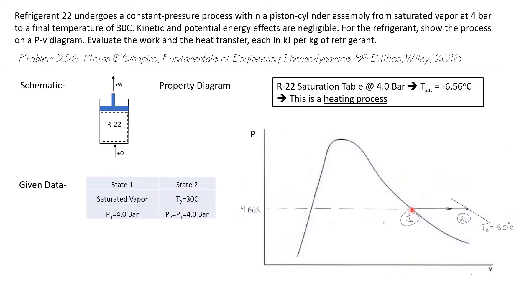Now we need to know whether this process is heating or cooling. I looked up state 1 conditions in the R-22 saturation table. A saturated vapor at 4 bar has a saturation temperature of minus 6.56 degrees Celsius. Since the final temperature is 30 degrees Celsius, we know this is a heating process.